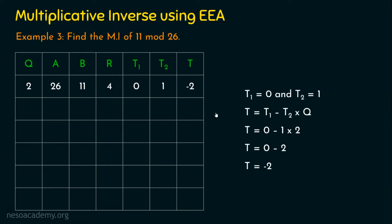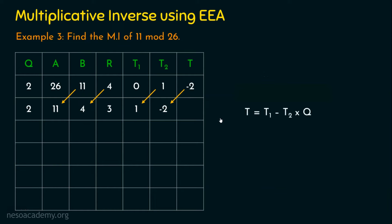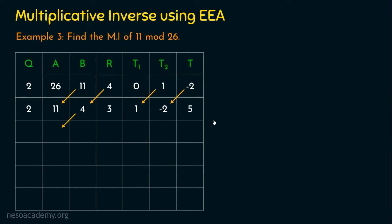Proceeding to step 2, we perform the shifting operation: the value of B is stored in A and the remainder is stored in B; similarly, T2 is stored in T1 and T is stored in T2. The table is now updated accordingly. We repeat the A mod B operation with A equal to 11 and B equal to 4, getting a quotient of 2 and a remainder of 3. With T1 equal to 1 and T2 equal to minus 2, we compute T equal to 5 and fill that value.